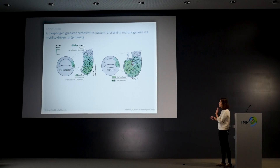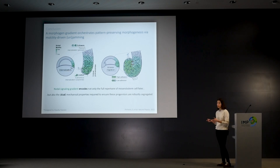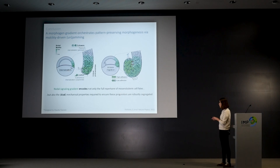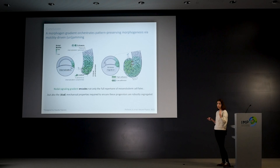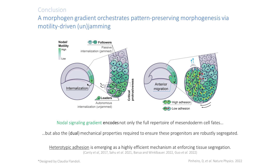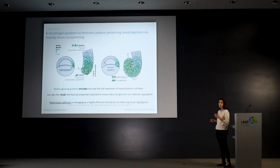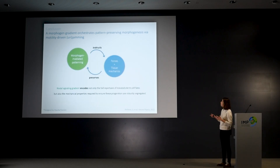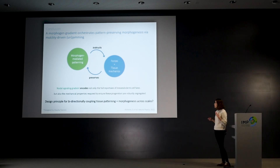Cells also use nodal for that, and we thought this was quite interesting because it means the gradient of nodal signaling — so far thought only to encode different cell fates — is also used to encode complex mechanical properties in these progenitors to allow correct segregation in time. It's really a dual process: motility initiates tissue movement, but nodal signaling also regulates adhesion within the follower cells. Differences in adhesion — heterotypic adhesion — are emerging both theoretically and experimentally as a really good mechanism to enforce tissue segregation. Here we really have a morphogen gradient that patterns the tissue, instructs the mechanics, which in turn acts to preserve the patterns initially laid down — this could be a general principle to couple patterning and morphogenetic programs across all scales.